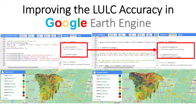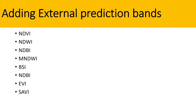There are a lot of ways to improve the accuracy of your land use land cover classification map. One by one I will show you all of those things in further tutorials. The first step is that you can add some external prediction bands in your land use land cover map.